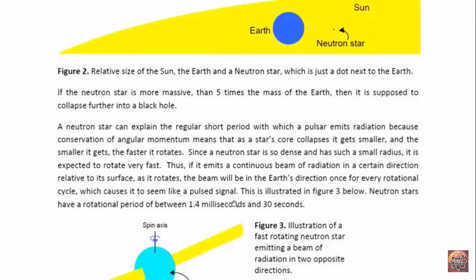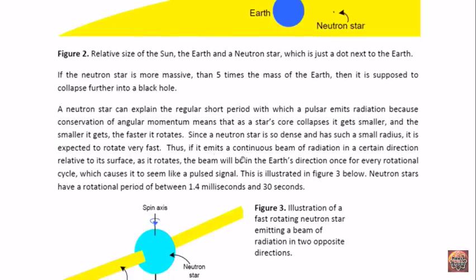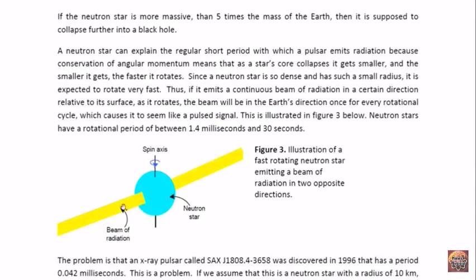A neutron star can explain the regular short period with which a pulsar emits radiation because conservation of angular momentum means that as the star's core collapses, it gets smaller, and the smaller it gets, the faster it rotates. Since the neutron star is so dense and has such a small radius, it is expected to rotate very, very fast. Thus, if it emits a continuous beam of radiation in a certain direction relative to its surface, as it rotates the beam will be in the Earth's direction once, at least, for every rotational cycle, which causes it to seem like a pulsed signal.